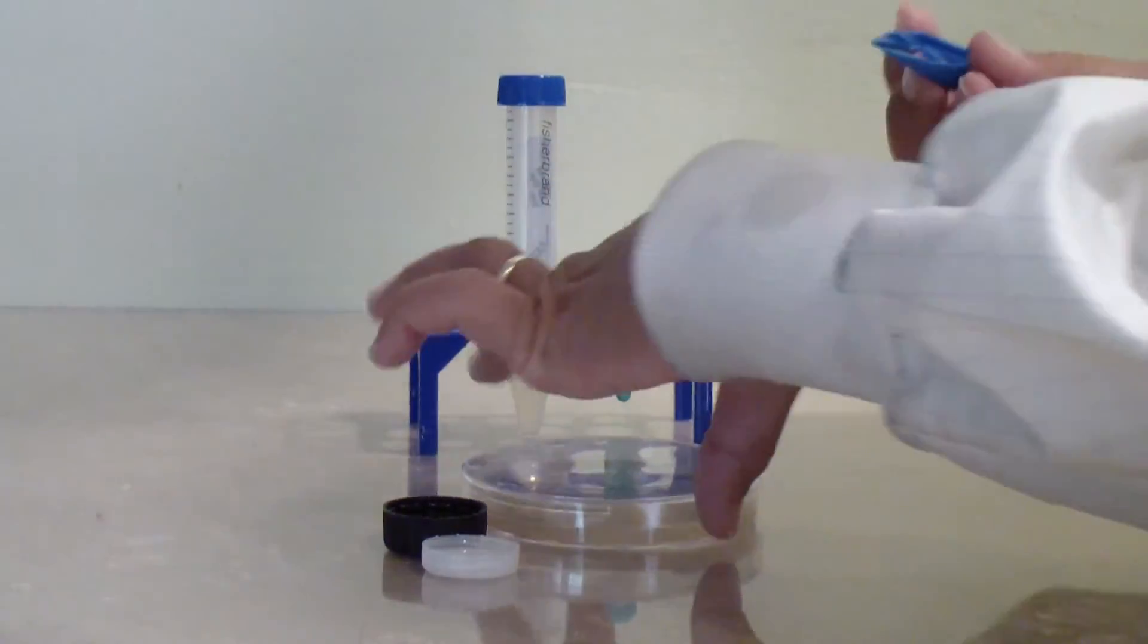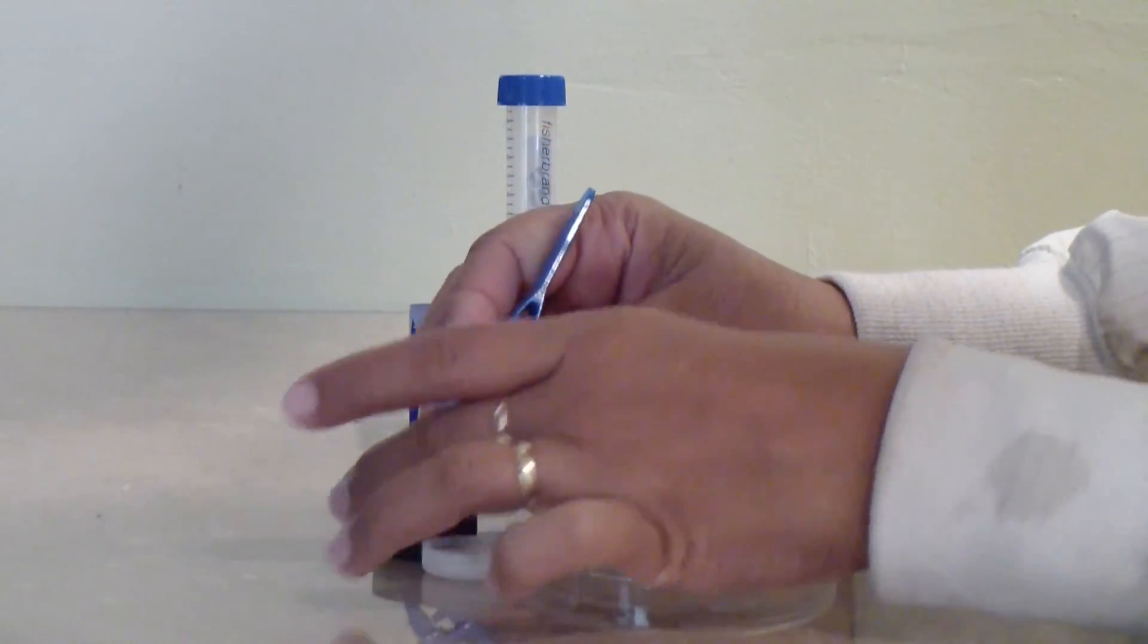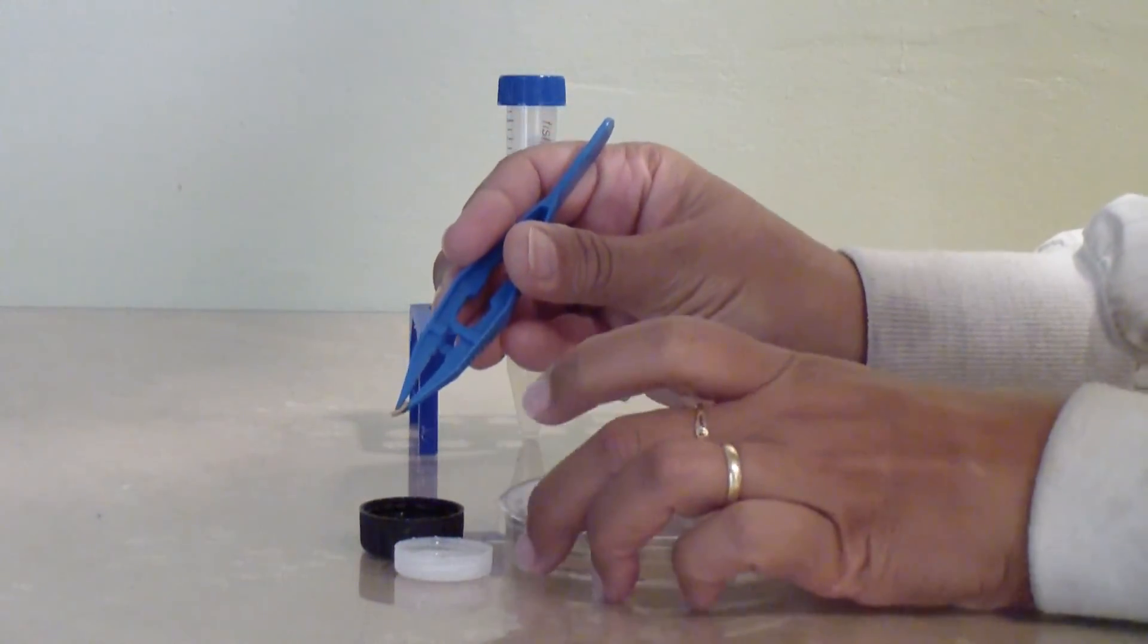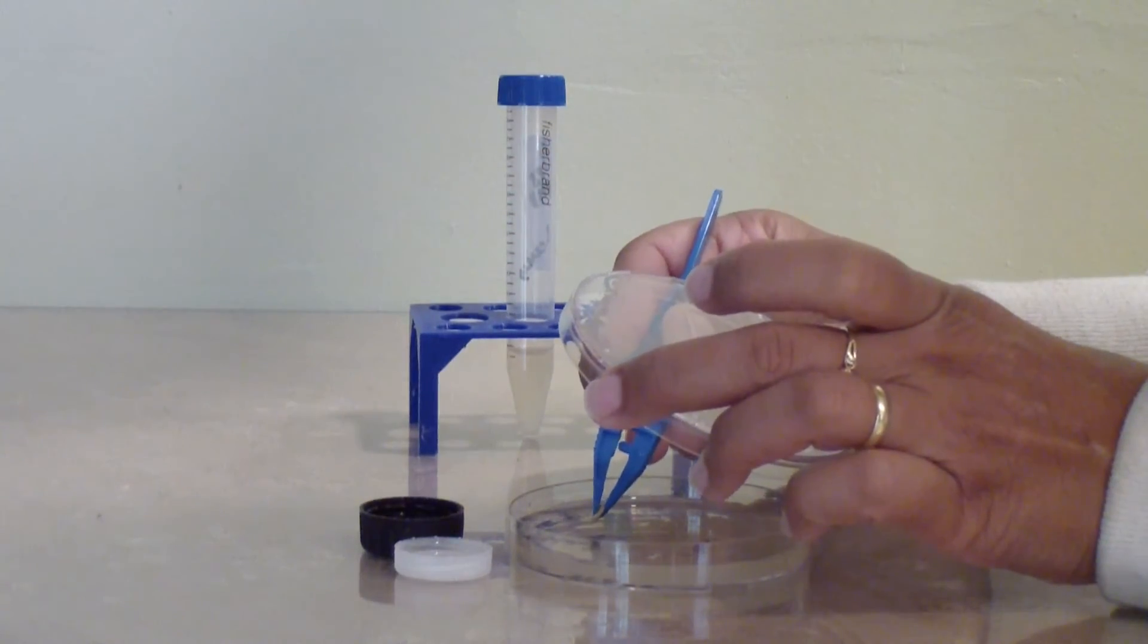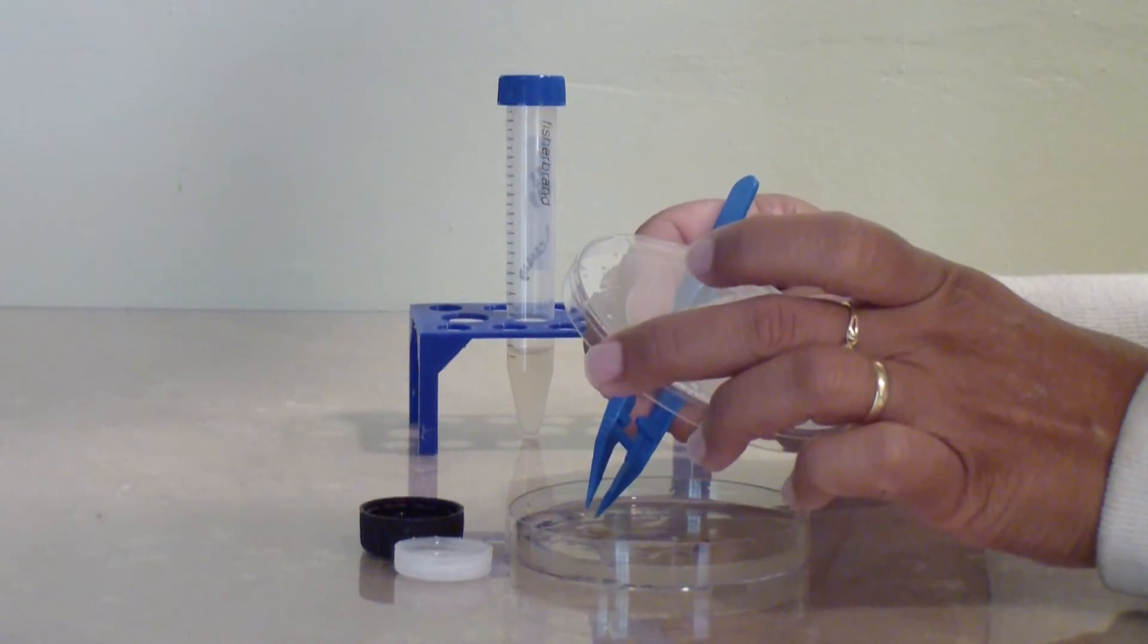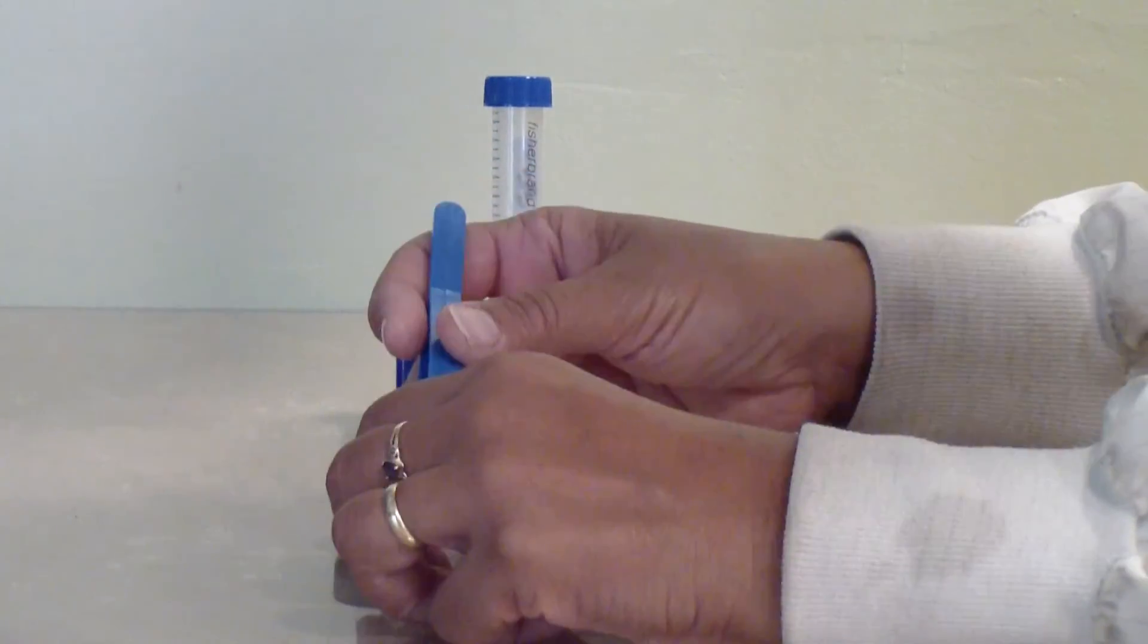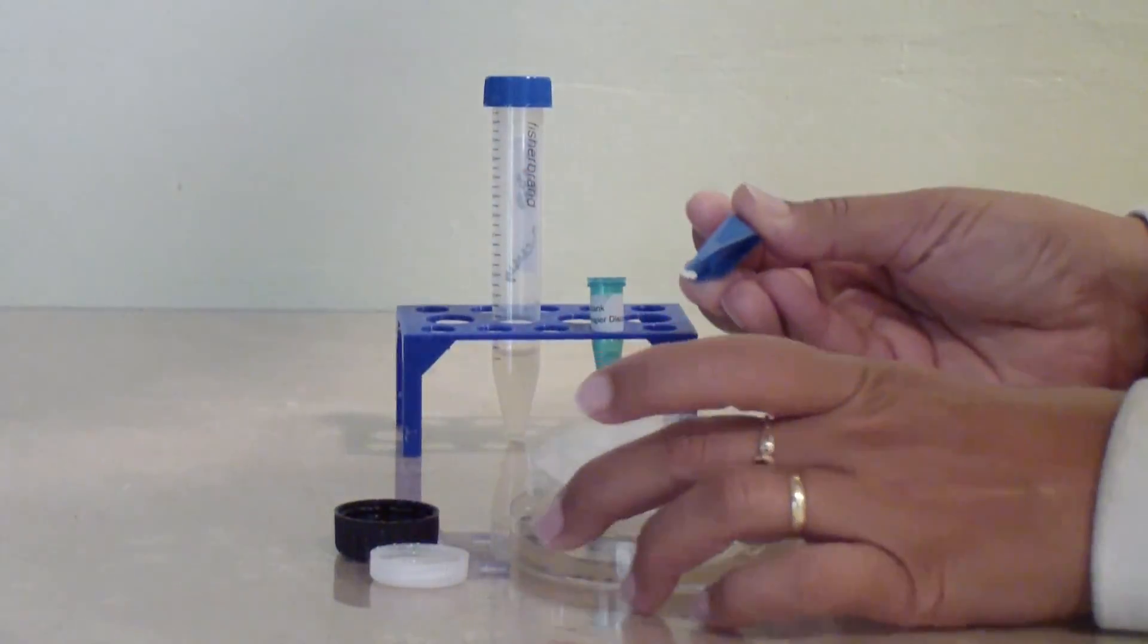With the forceps, place a disc onto your plate right on the spot indicated with the dot. Use the tip of the forceps to press the disc gently down onto the surface of the agar. Place the remaining discs on their designated spots.